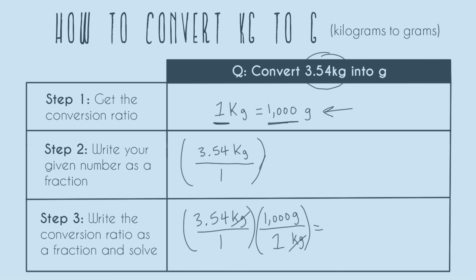Both of these ones in the denominators aren't really going to do anything, and we can see that we need to plug in 3.54 times a thousand into our calculator. So when we do that we get 3540 grams and this is our final answer.